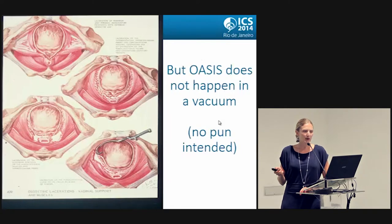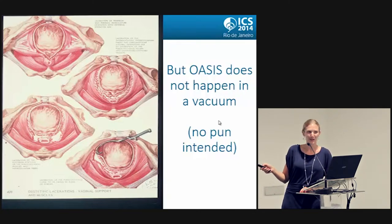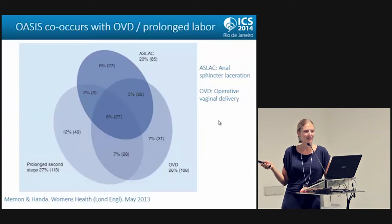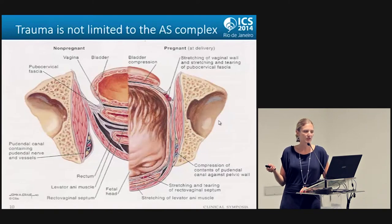It's important to remember that OASIS is not happening in a vacuum — it's not just OASIS, it's a birth at the same time. So we're not just damaging the sphincter, we're damaging everything. When I first saw these photos they completely terrified me, seeing all of these muscles of the pelvic floor that we painstakingly repair in women, and what happens to them during vaginal birth. A lot of anal sphincter injuries happen in the context of operative vaginal delivery and prolonged second stage of labor, and those things have other impacts on continence.